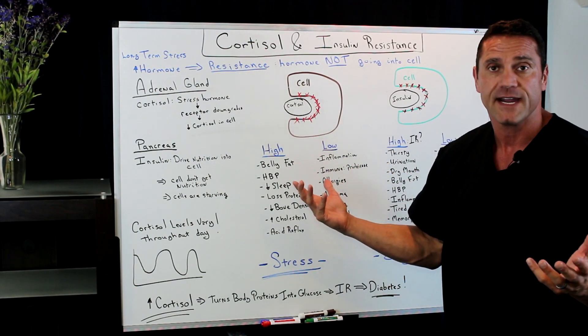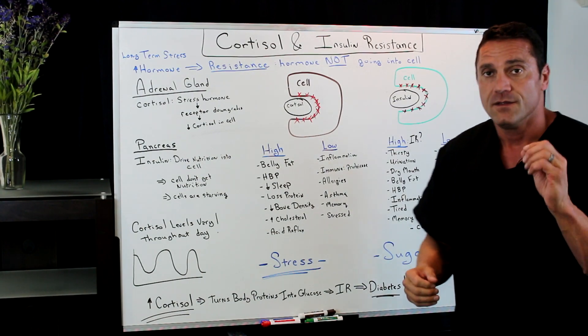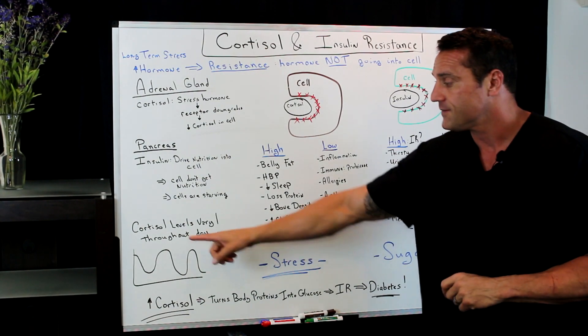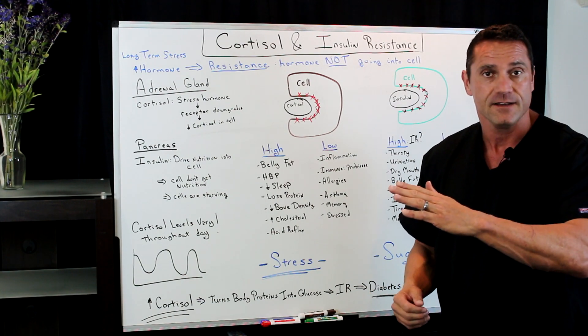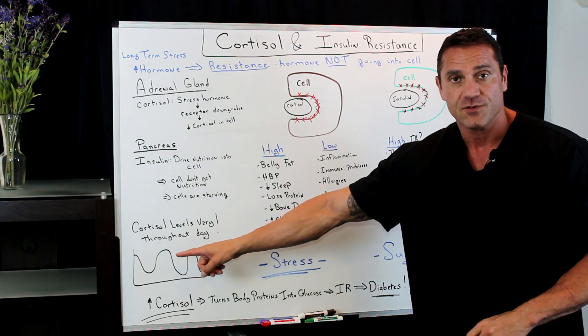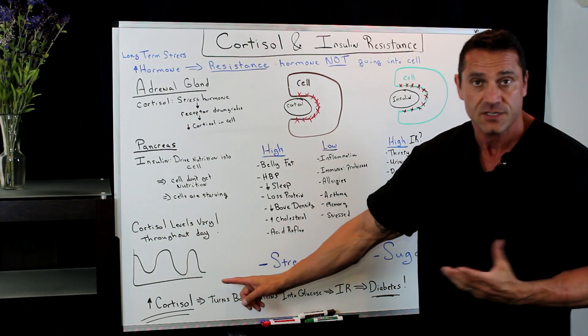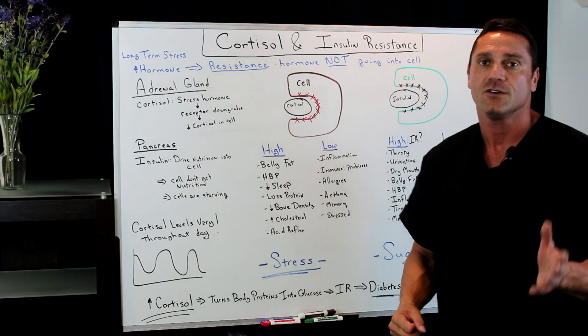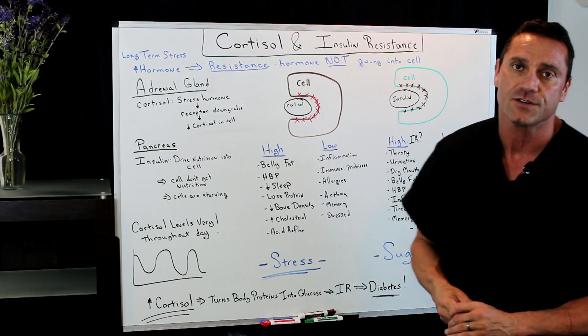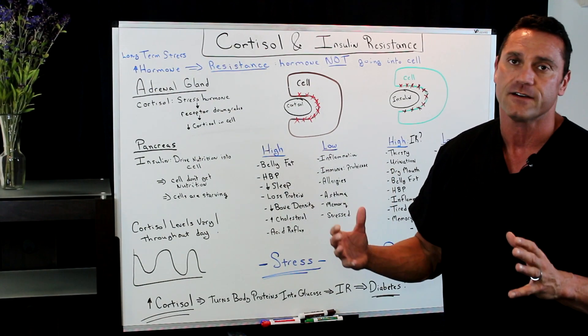This is a safety mechanism. The caveat is cortisol levels vary throughout the day. It's typically high in the morning, takes a dip, goes high, takes a dip, goes high, and takes a dip typically by nighttime. To actually measure cortisol levels in the bloodstream is very, very hard to do.